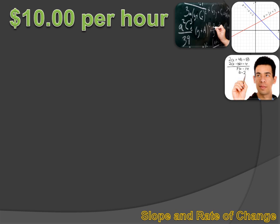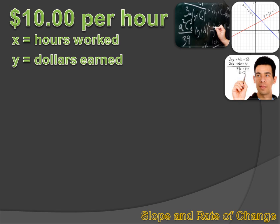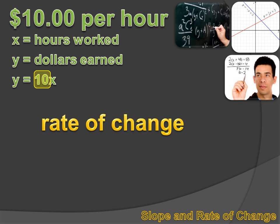We could turn this into a formula. We could call X, the number of hours worked. And we could call Y, the dollars earned. Then we could have a formula that Y, the dollars earned, equals 10 times X, the hours worked. And that 10 is our rate of change. It's also our slope. M is the mathematical symbol for slope. So, in this equation, M equals 10.